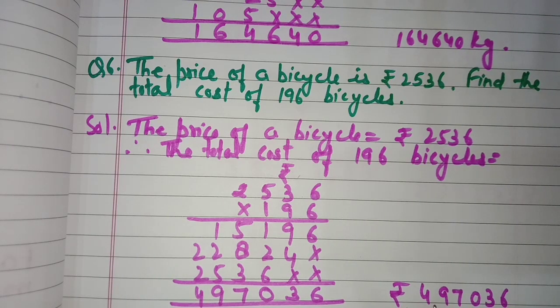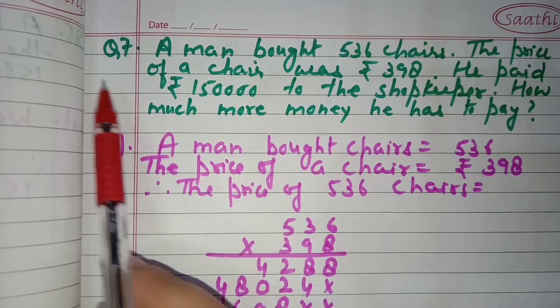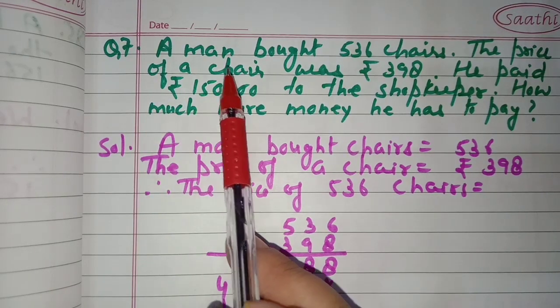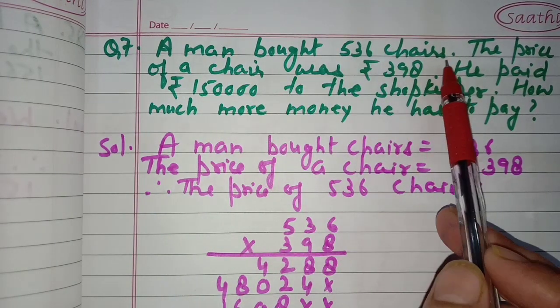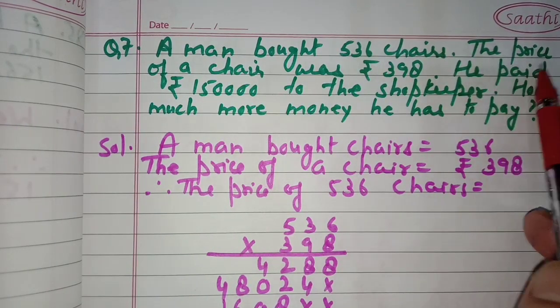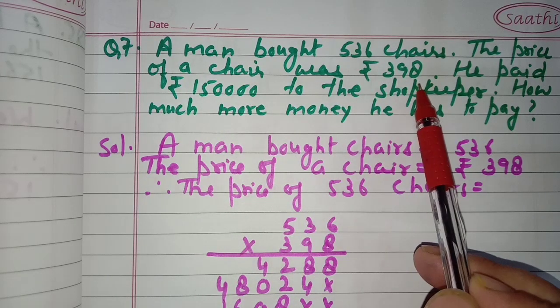Multiplying 2536 by 196, we get 4,97,056. So the total cost of 196 bicycles is rupees 4,97,056.